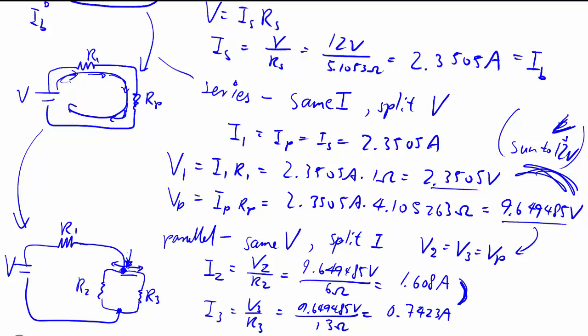And you can check that these two currents actually add up to the original current that's coming across the equivalent parallel resistor. And so now we have successfully solved, quote unquote, the circuit by finding out all the voltage and current.